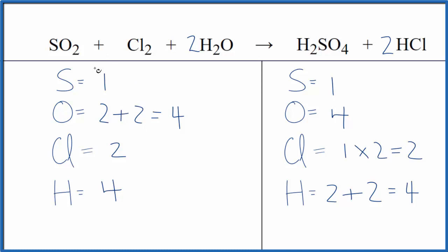This is Dr. B with the balanced equation for sulfur dioxide plus chlorine gas plus water gives us sulfuric acid and hydrochloric acid.